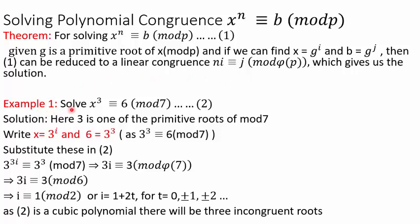Let's come to the first example where we are asked to solve x³ ≡ 6 (mod 7). Now, the modulus 7 is a prime number. Remember, all prime numbers have primitive roots. So if we check, we will see that 3 is one of the primitive roots of mod 7. In one of my videos I have explained how primitive roots are found. So we start with 3 as a primitive root and will write x as a power of 3.